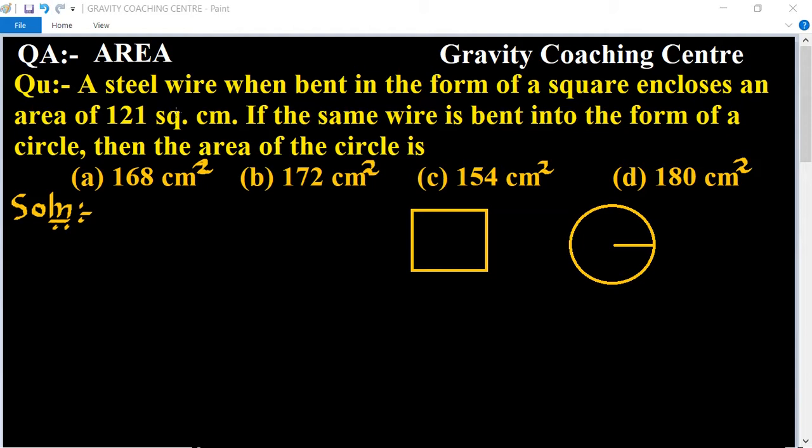In this question, the area of the square is given. Suppose the side of the square is a and radius is r.